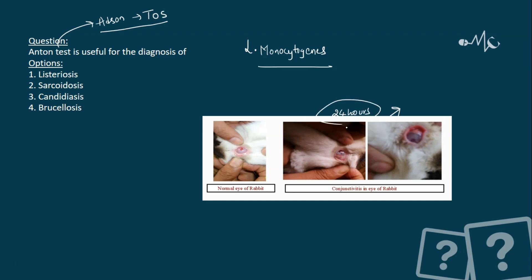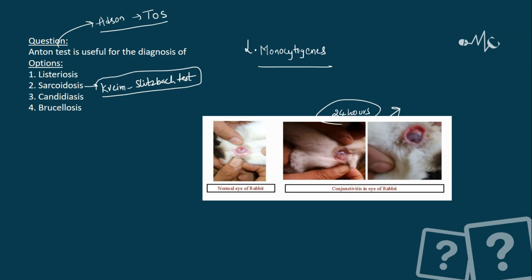In the past, this is how we used to identify Listeria monocytogenes. Now, regarding sarcoidosis, there is again a specific characteristic test called the Kveim-Siltzbach test — this is important and can be another MCQ. This test is specific to detect sarcoidosis, and it is a skin test like our BCG test.